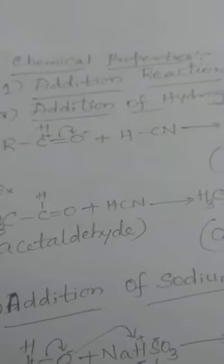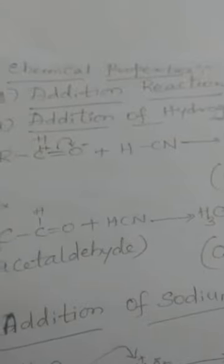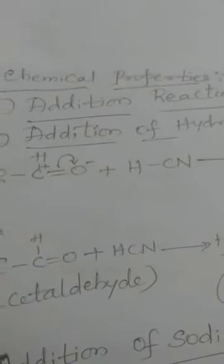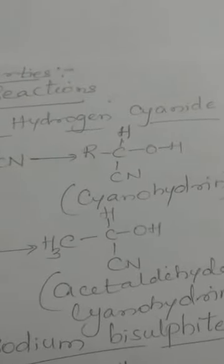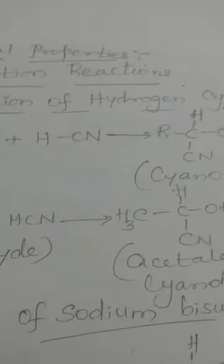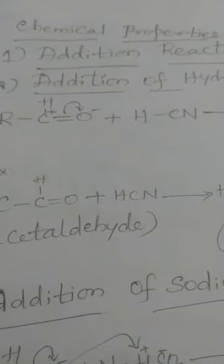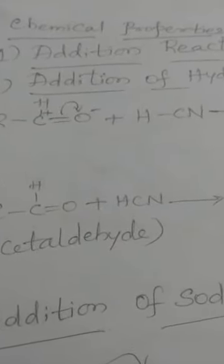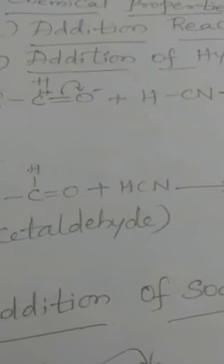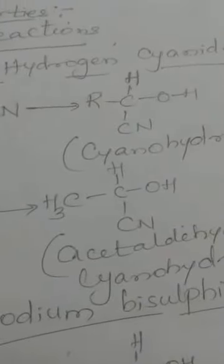Starting with the first set: addition reactions, where addition takes place across the carbonyl group. The first addition reaction is addition of hydrogen cyanide, HCN. The general formula of an aldehyde is RCHO. Aldehydes react with HCN; C⁺ and O⁻ is formed, wherein O⁻ picks up H⁺ and C⁺ picks up CN⁻.